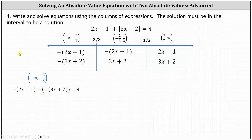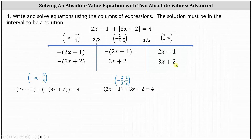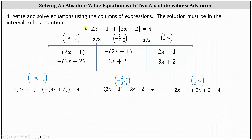This gives us: the opposite of the quantity 2x minus 1, plus the opposite of the quantity 3x plus 2, equals 4. For the next interval, we have the opposite of the quantity 2x minus 1, plus the quantity 3x plus 2, equals 4. For the third column, we have the quantity 2x minus 1, plus the quantity 3x plus 2, equals 4. Now we solve these equations — if the solution is in the given interval, it is a solution to the original absolute value equation.